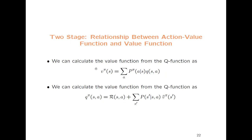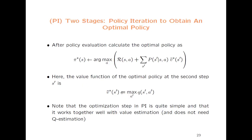We have a nice relation between the V-function and the Q-function: the value function is just the Q-function multiplied by the policy π(a|s) and integrated over all actions. We can also go the other way: if you have the value function at the following state s', multiply it by the transition probability, integrate over s', and add the reward function as a function of s and a.